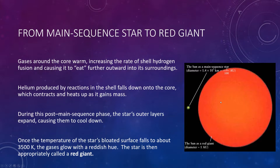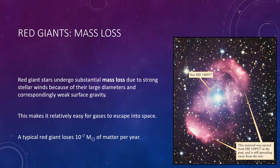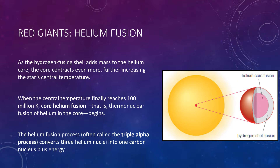This image shows the present-day Sun and what the Sun will look like when it becomes a red giant — notice it is a lot larger, and could even engulf the Earth. Red giant stars undergo substantial mass loss due to strong stellar winds, because of their large diameters and correspondingly weak surface gravity. This makes it relatively easy for gases to escape from the red giant and into space. A typical red giant loses roughly 10⁻⁷ solar masses of matter per year, whereas the Sun's present-day mass loss rate is only 10⁻¹⁴ solar masses per year. Hence, an evolving star loses a substantial amount of mass as it becomes a red giant.